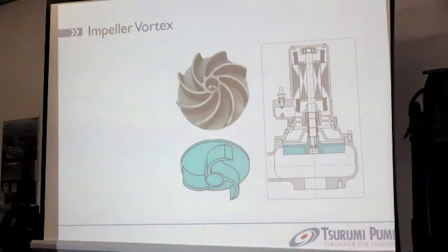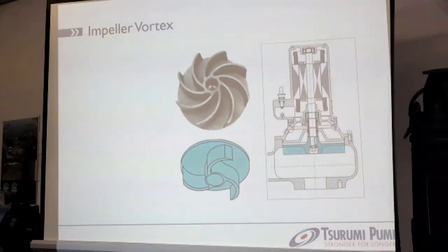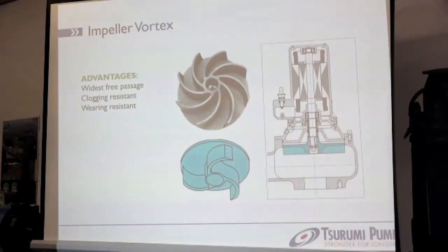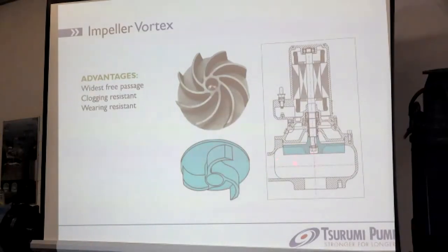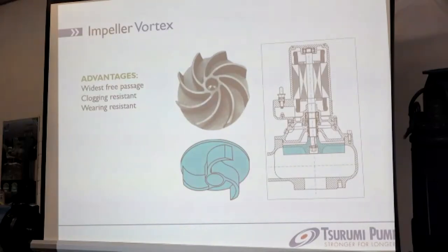The first impeller is the vortex impeller — the most simple technical design of impellers you can find. There are photos and a cut drawing of a pump with the vortex impeller. The advantages of the vortex impeller are the widest free passage among our possibilities, the highest clogging resistance due to that wide free passage, and the highest resistance against wearing. The pumping effect is not done by direct contact with the impeller; it is done by a vortex created by the rotation of the impeller — an indirect pumping effect.